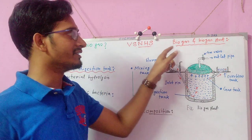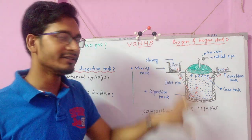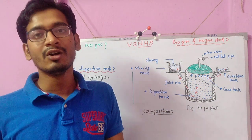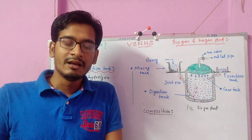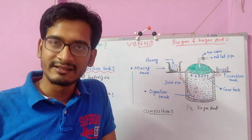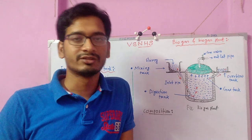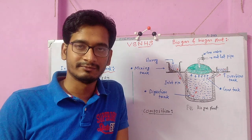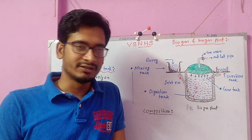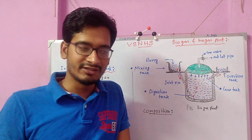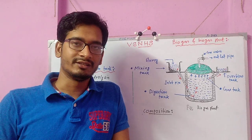This alternative source of energy is biogas. In villages, biogas is sometimes called gobar gas. What is biogas? Biogas is generated mainly by the anaerobic oxidation of biomass. Anaerobic oxidation is the chemical change of biomass in the absence of oxygen.